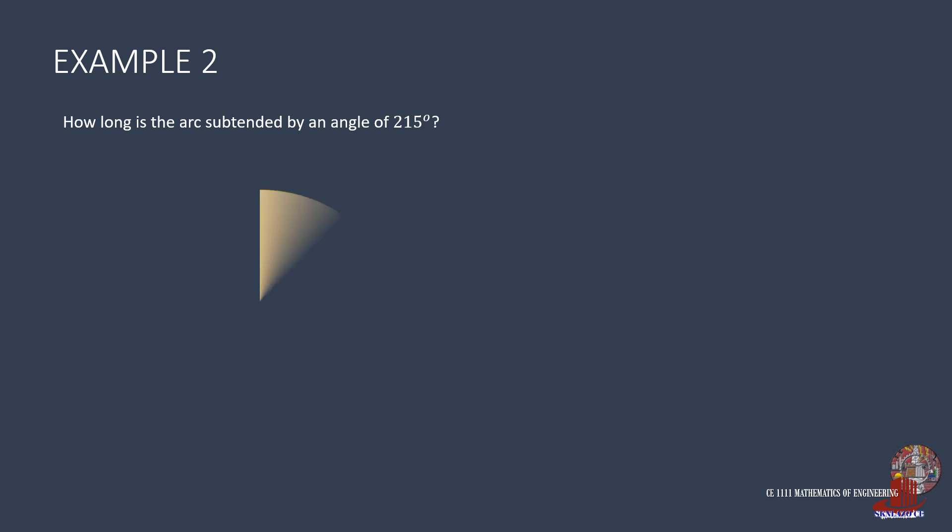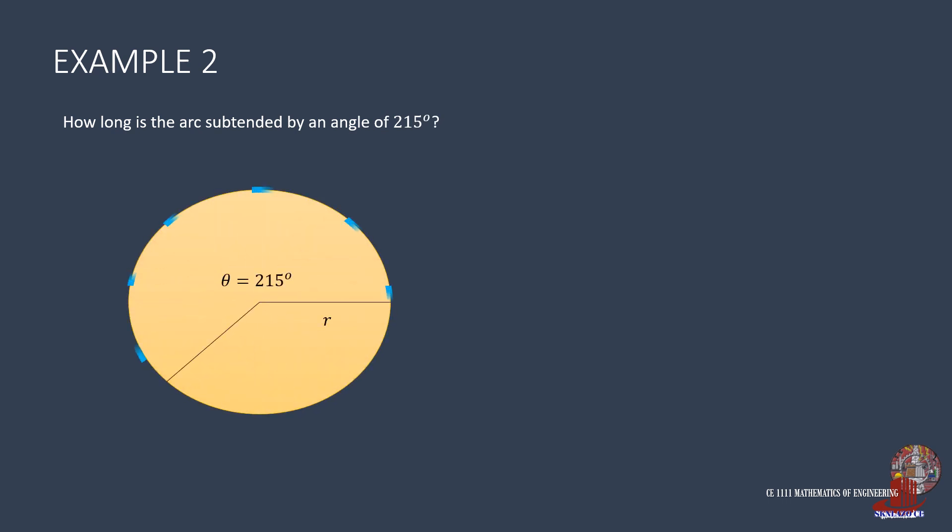How about if the angle provided is in degrees? For example 2, we are to compute for the arc subtended by an angle of 215 degrees. Still using the equation s equals r theta, we are to look for s, but r is also not given. We can still proceed with the solution however. Our answer will be in terms of radius. That would be r times 215 degrees times the conversion factor of π over 180. And we get s as 43/36 π times r in meters.